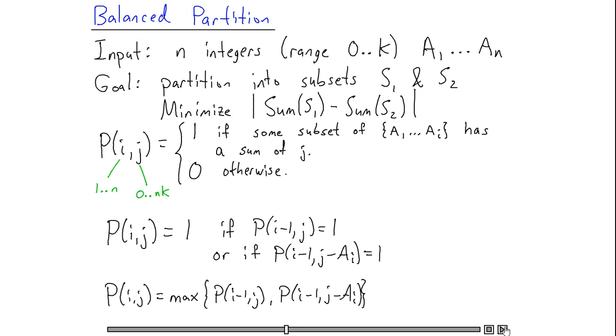Okay, so solving for all of these p of ij values is going to take me order of n squared k time, because each one of them requires order one time to compute, and there's n squared k of them.